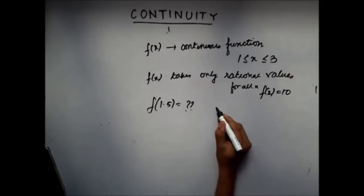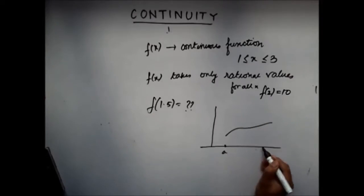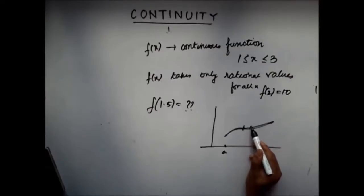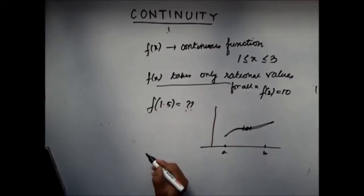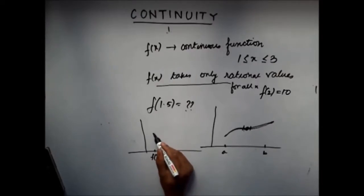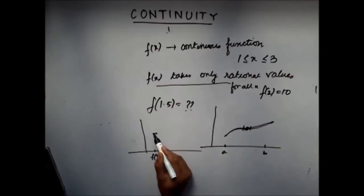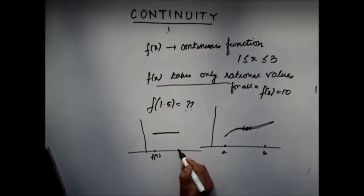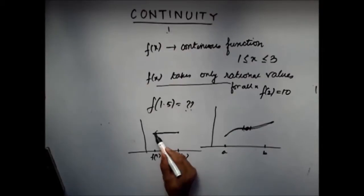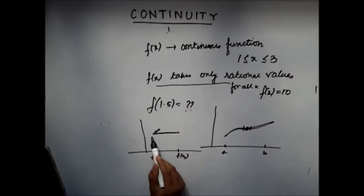The trick is: if you have a function which is continuous on an interval, it takes all rational and irrational values, because between any two rational values there are infinitely many irrational values. But it's said that the function can take only rational values. That means it has to be a constant, because if it moves even slightly, between any two function values there would be irrational values. So it has to be a constant value.